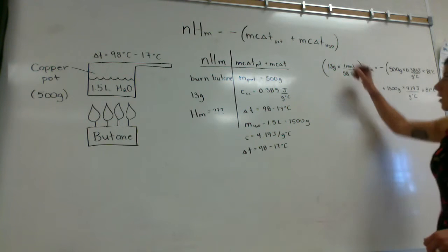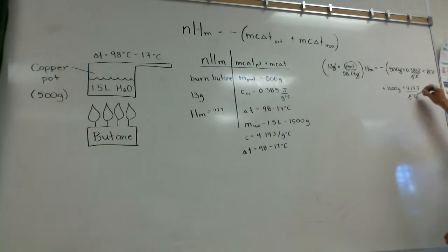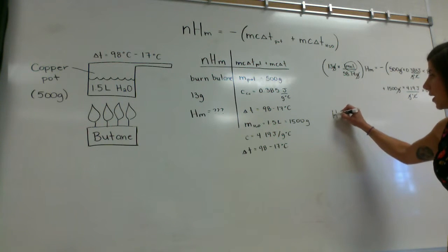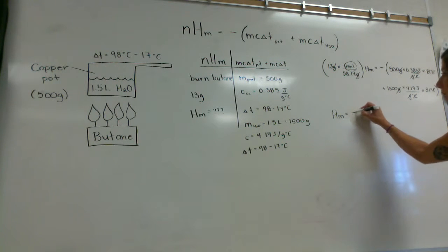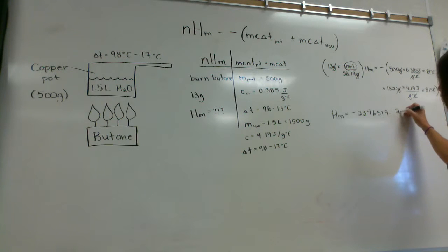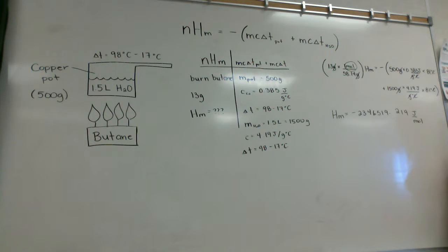Overall our units still cancel out — grams cancel, so we have moles on one side; grams and degrees Celsius cancel on both equations, and we're left with joules per mole. We add up the right side and divide by our moles to find the molar enthalpy. When we calculate it all out, we end up with negative 2,346,519.219 joules per mole. It takes a lot more energy to heat up both the pot and the water, which is more realistic. The reason is because it's an open system — a lot of heat is lost to the surroundings.